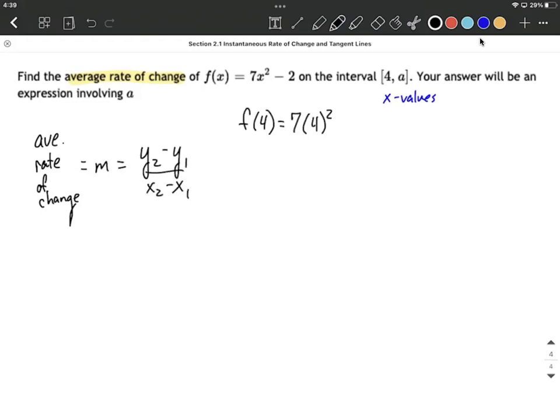So 4 squared minus 2. That's 7 times 16 minus 2. And 7 times 16 works out to be 112 minus 2. So that'll work out to be 110. So that corresponds with the ordered pair 4 comma 110.